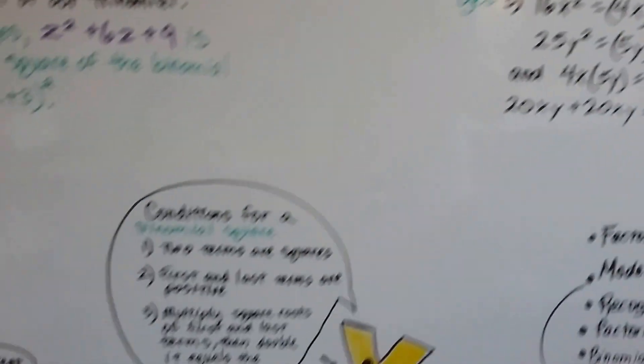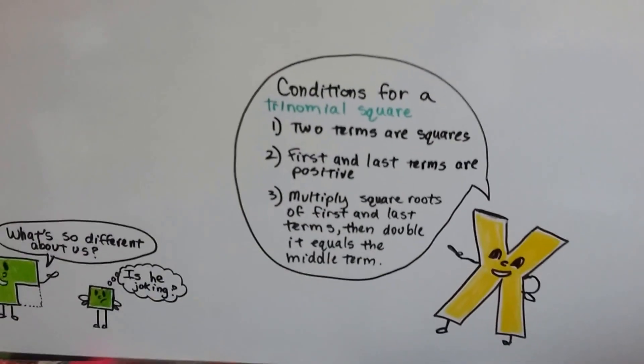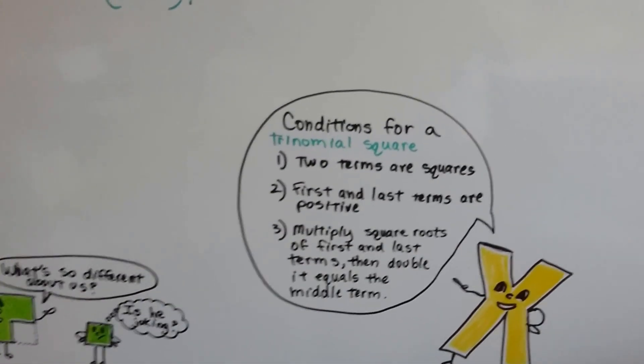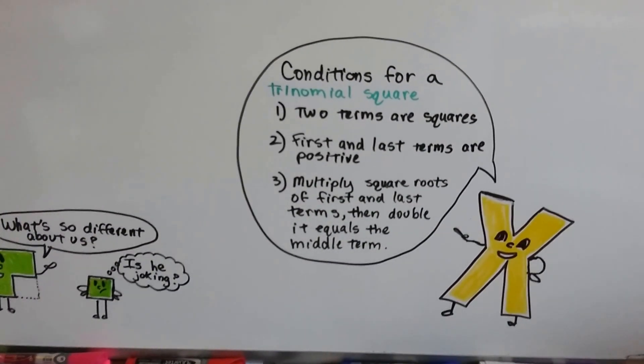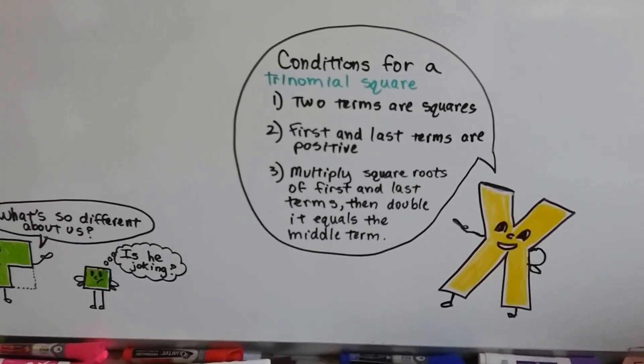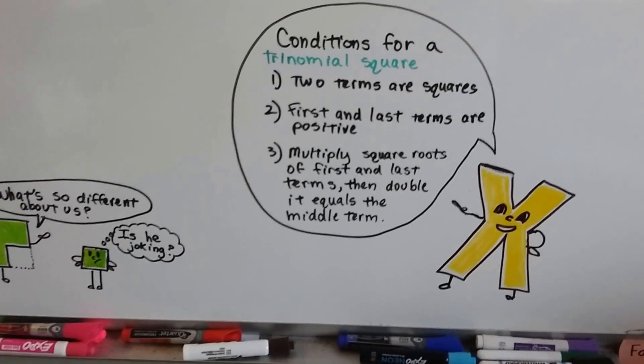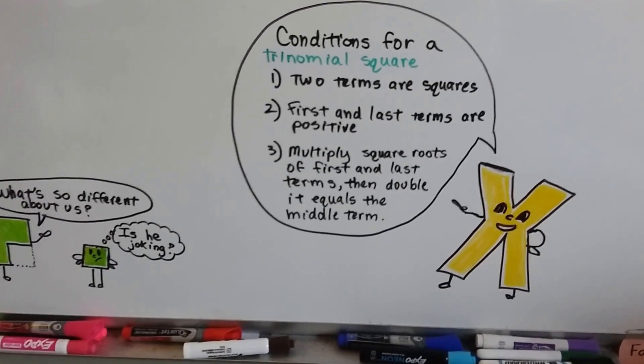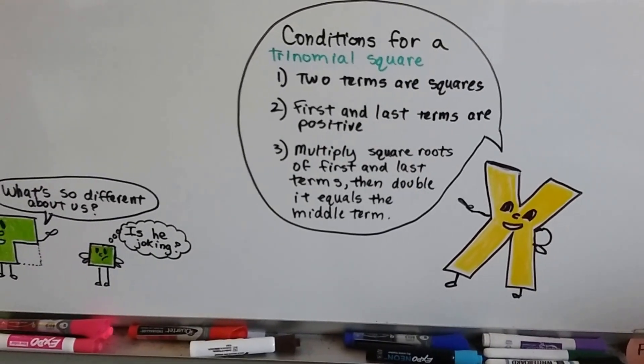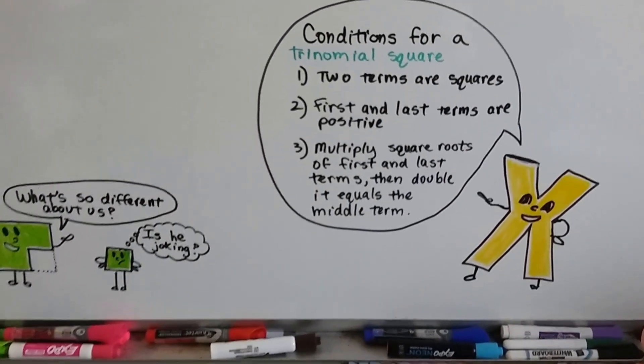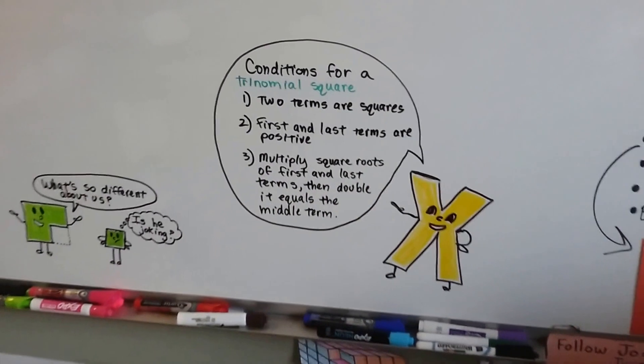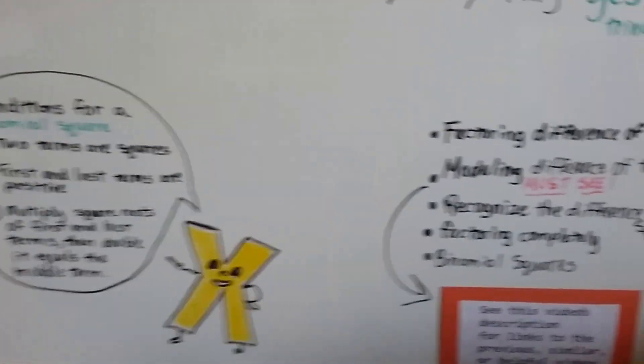So remember, those are the conditions. You know it's a trinomial square if it's the square of a binomial. And the conditions are: two terms are squares, the first and last terms are positive, and when you multiply the square roots of the first and last terms and double it, it'll equal the middle term of the trinomial square. Hopefully I've said it so many times it's drilled into your head.